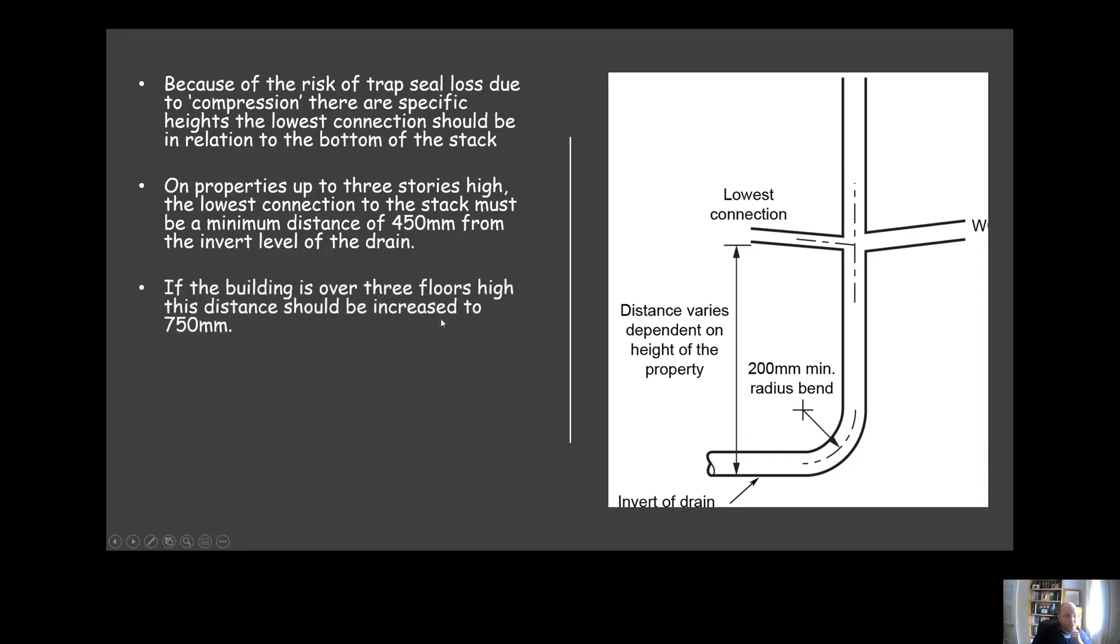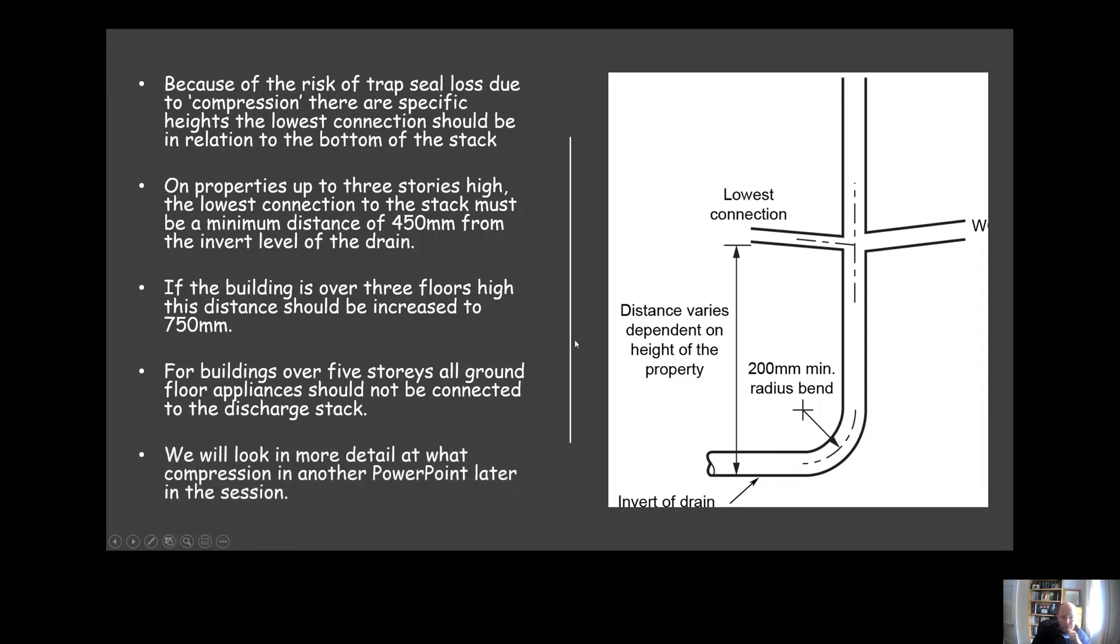If the building's over three stories high, that's four or five stories high, this distance should be increased to 750. If it's between five and ten stories high, you shouldn't make any connections on the first floor or ground floor at all. We'll actually look at what we mean by compression in the next part of the session. Also worth noting, at the base of the bend the radius should be at least 200 millimeters.